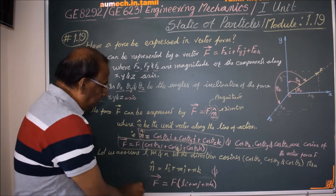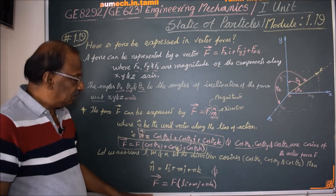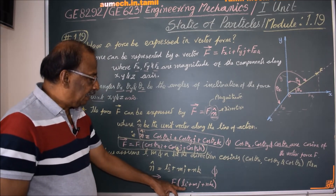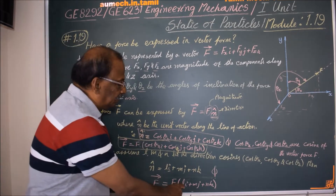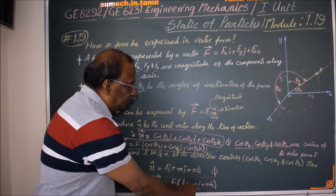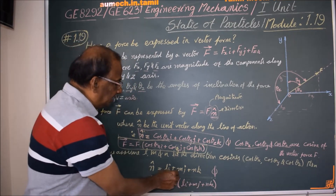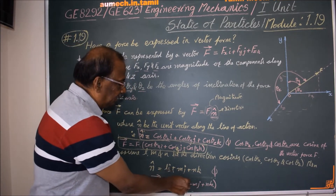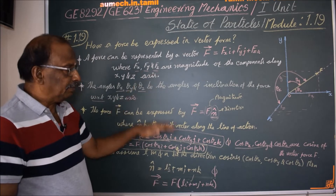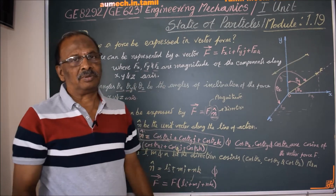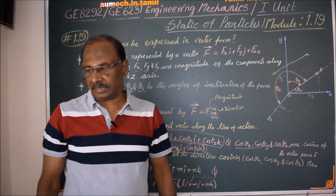So the vector F is equal to F into (L·i plus M·j plus N·k). This is the magnitude multiplied by the direction. These are the two methods you can use.